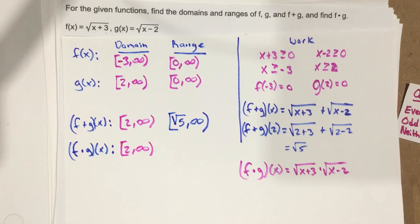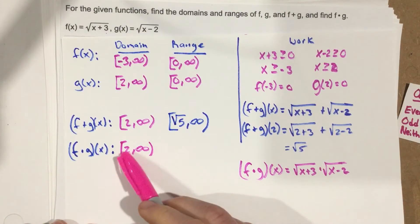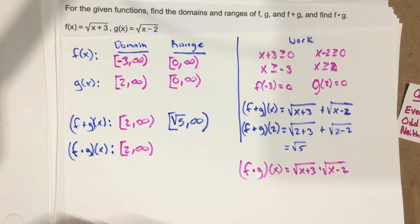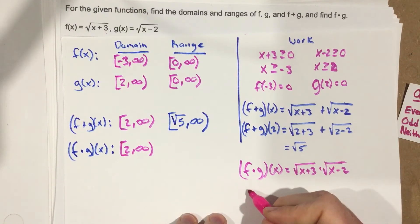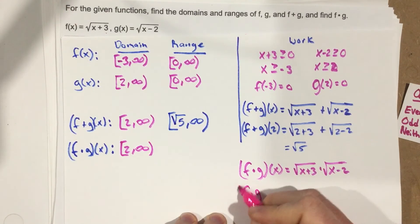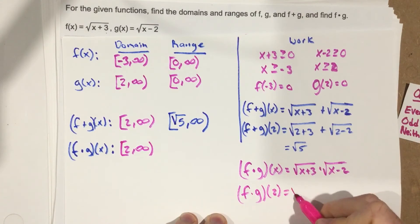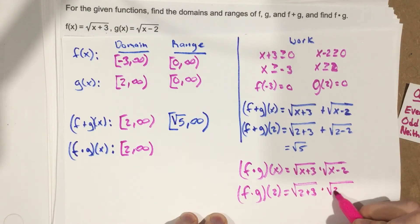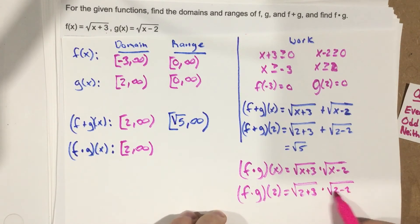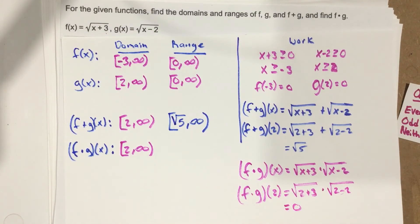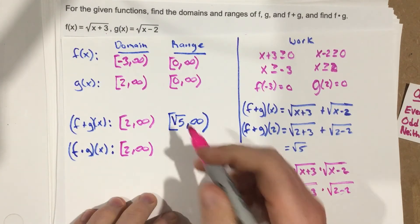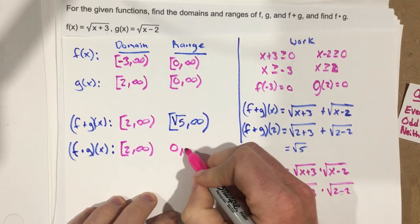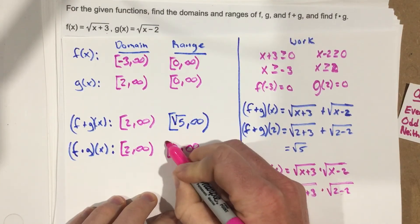For the range, I plug in the smallest domain value. F times g of 2 gives root 2 plus 3 times root 2 minus 2. Well, 2 minus 2 is 0, and 0 times anything is 0. So 0 is my smallest number, and the range goes from 0 to infinity for f times g.